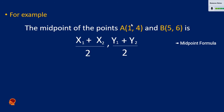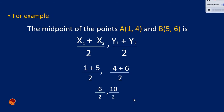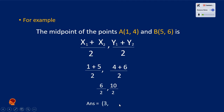Label your points. The ordered pair has 1 as x and 4 as y; 5 is x and 6 is y. We are going to substitute the values of the two endpoints into our formula. We then perform the operation and get 6 over 2 and 10 over 2. When you divide them, we get 3 and 5 as the midpoint of the two endpoints.